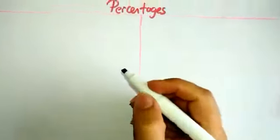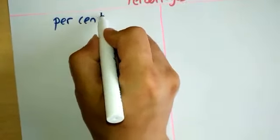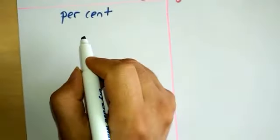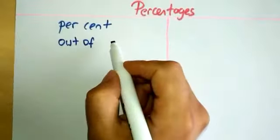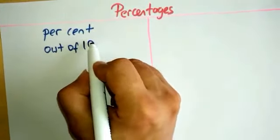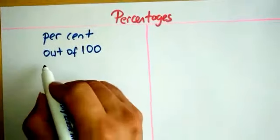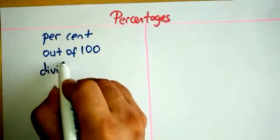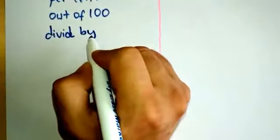Let us explore the term percentages now. Percent means out of hundreds. In mathematical language, out of means divide by.